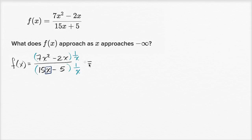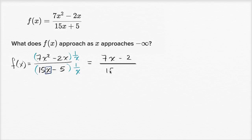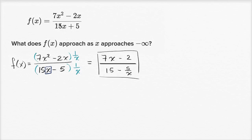7x squared divided by x is 7x. 2x times one over x is just 2. And all of that over: 15x divided by x is 15, and then minus five over x. This is equivalent to what we started with, but makes it easier to think about what happens when x gets very, very negative.